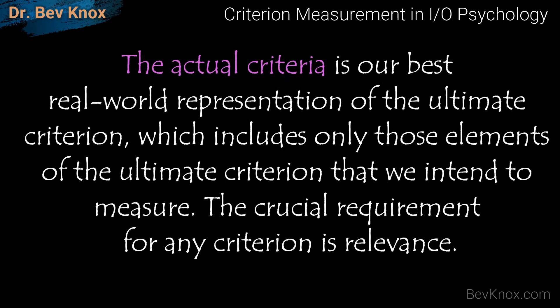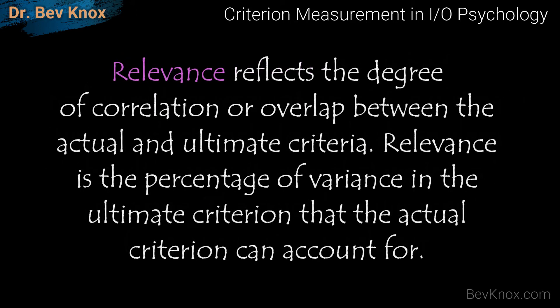The actual criteria is our best real-world representation of the ultimate criterion, which includes only those elements of the ultimate criterion that we intend to measure. The crucial requirement for any criterion is relevance. Relevance reflects the degree of correlation — that is, the relationship between variables — or overlap between the actual and the ultimate criteria. Relevance is the percentage of variance in the ultimate criterion that the actual criterion can account for.